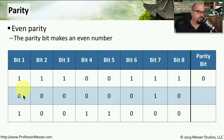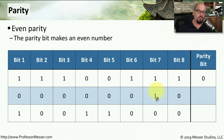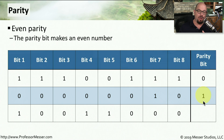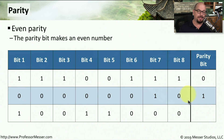Looking at the next byte: 0, 0, 0, 0, 0, 0, 1, 0. There is only a single 1 inside this byte, which is an odd number. In order to make this even parity, we need to add a 1 as the parity bit so that the total number of ones becomes even.